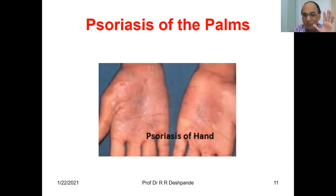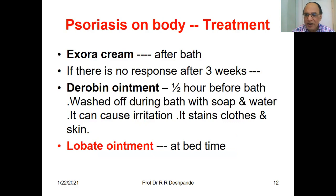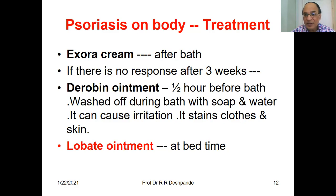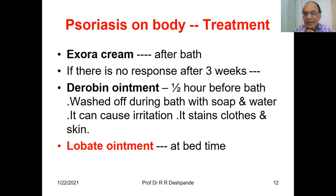Pictures are always better for skin problems. For psoriasis on the body, apply Egzura cream after bath. If there is no response after three weeks, apply Derobin ointment one half-hour before bath — it is washed off during bath with soap and water. Note that Derobin ointment can cause irritation and staining of the clothes and skin — please explain these things to the patient before prescribing. At bedtime, you can apply Lobate ointment on the lesions.